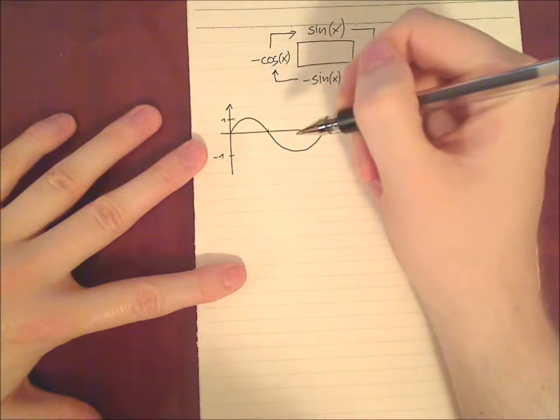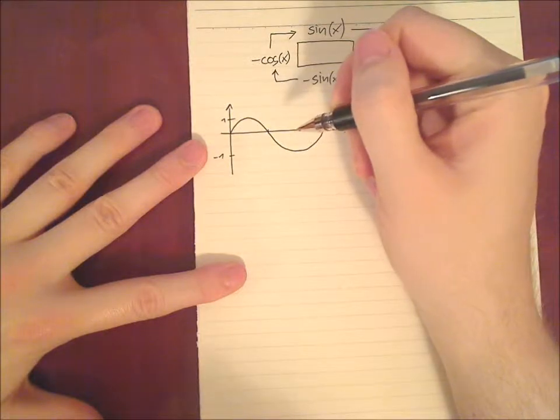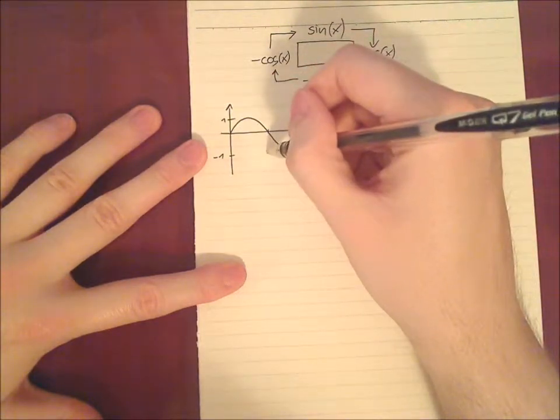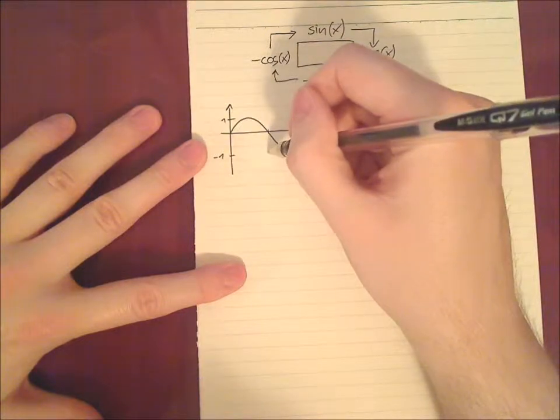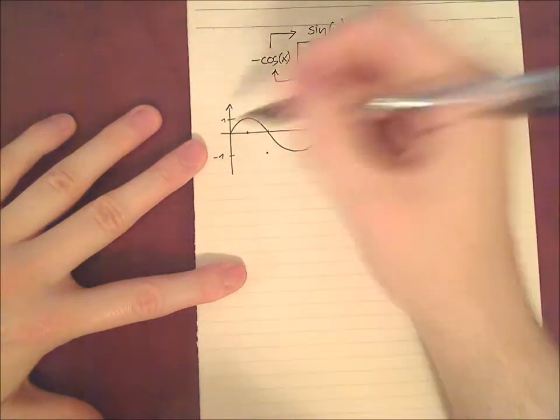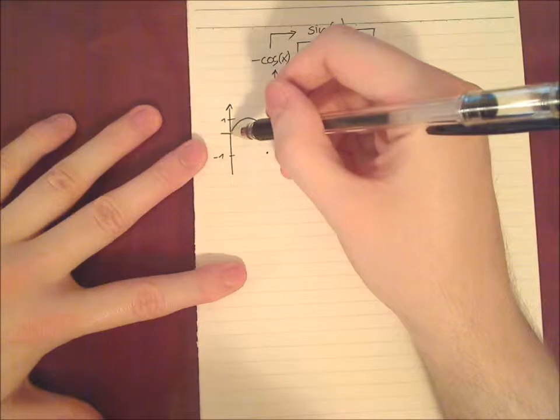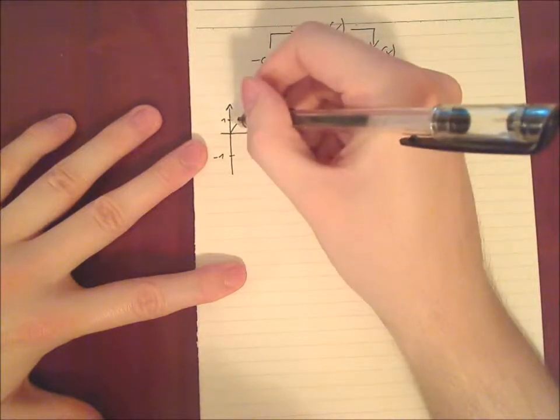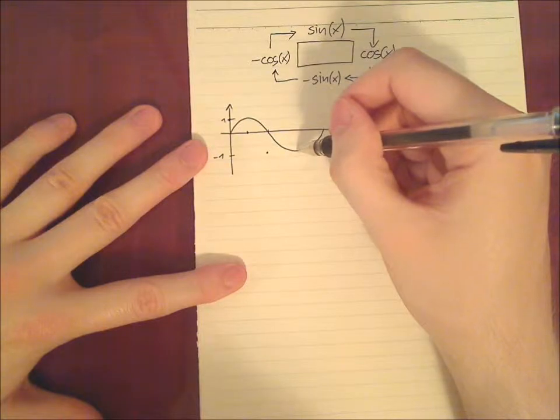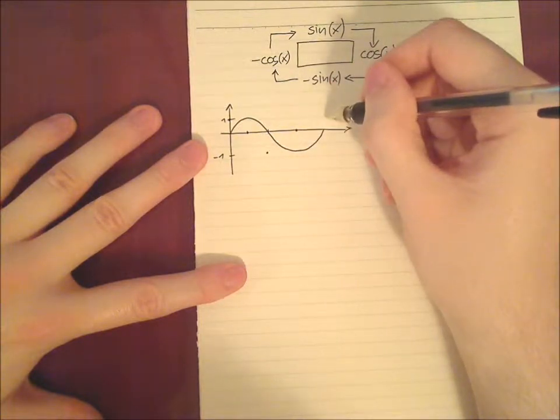we look at the slope and we see, here we have maximum negative slope, which will be then a minus one. We see here we have zero slope, which is here. And here we see maximum positive slope, which is here. Here we see zero slope, and here maximum positive slope again.